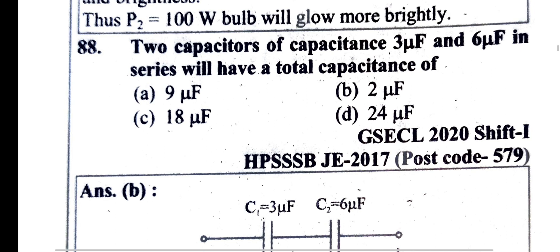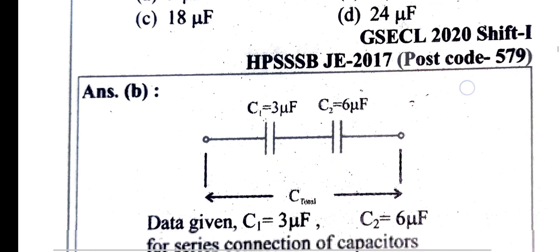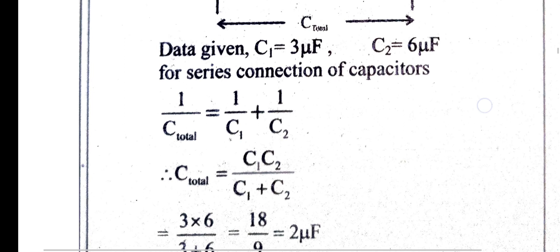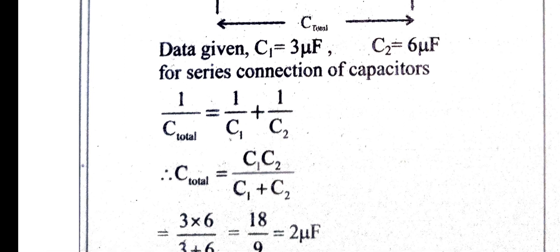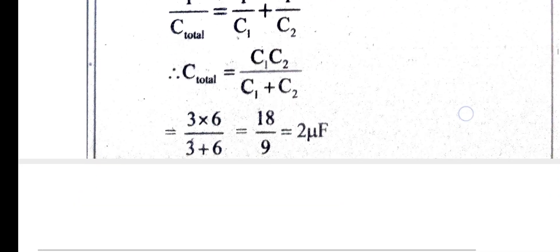Capacitors of 3μF and 6μF are connected in series. The total capacitance for series connection is C1 times C2 divided by C1 plus C2, which equals 2μF.